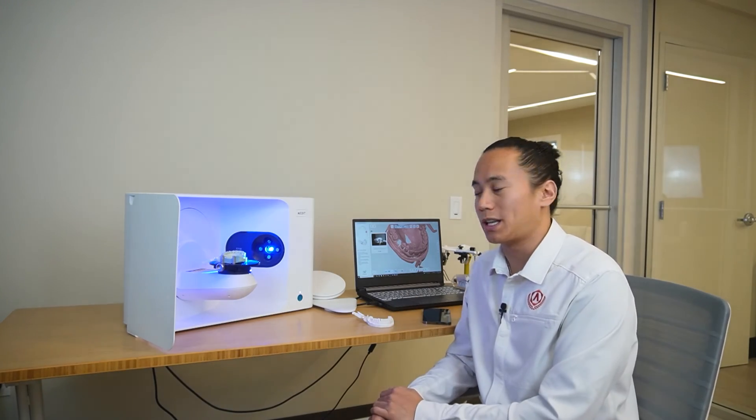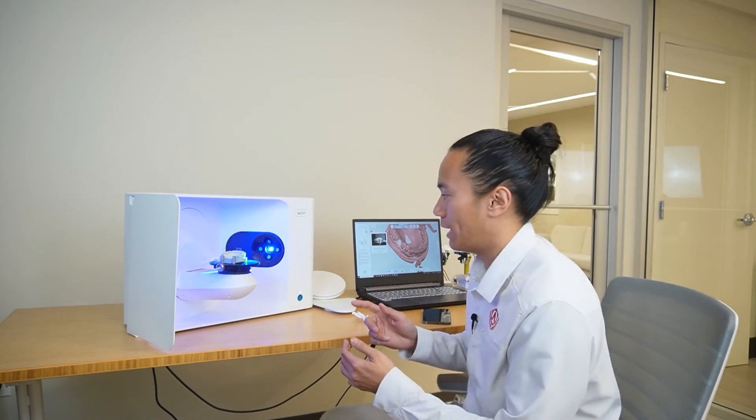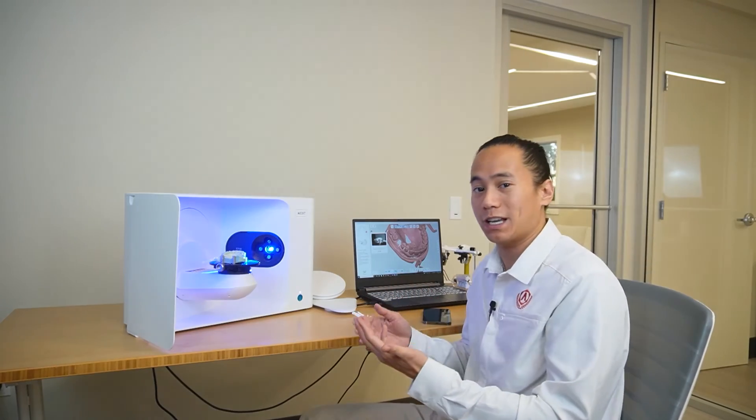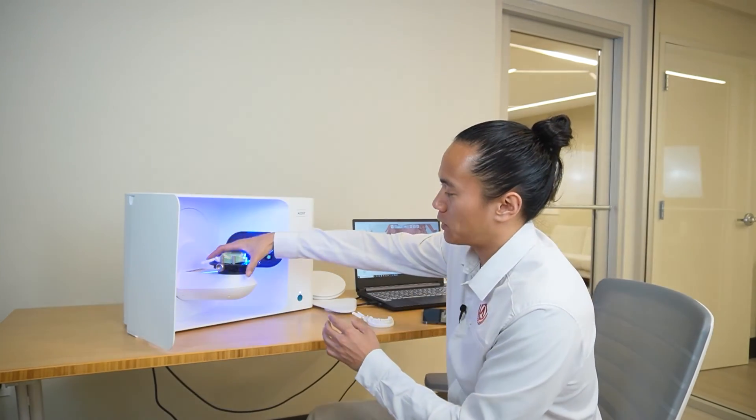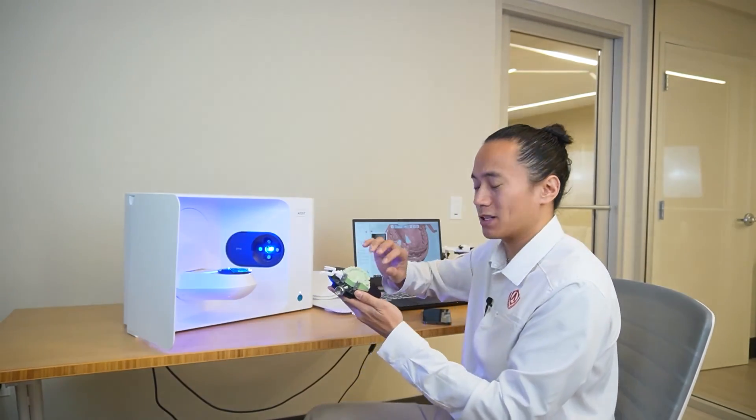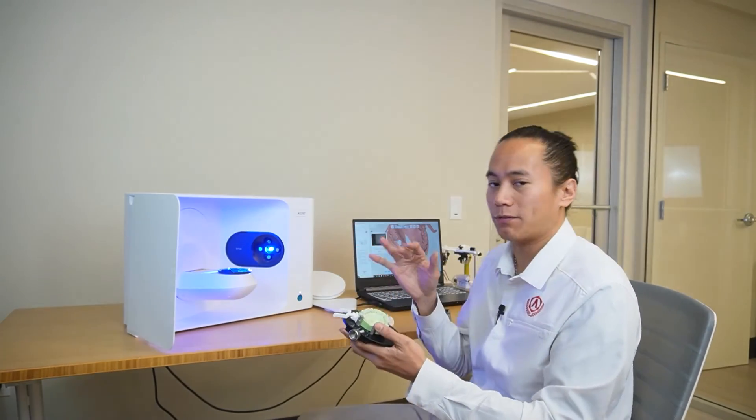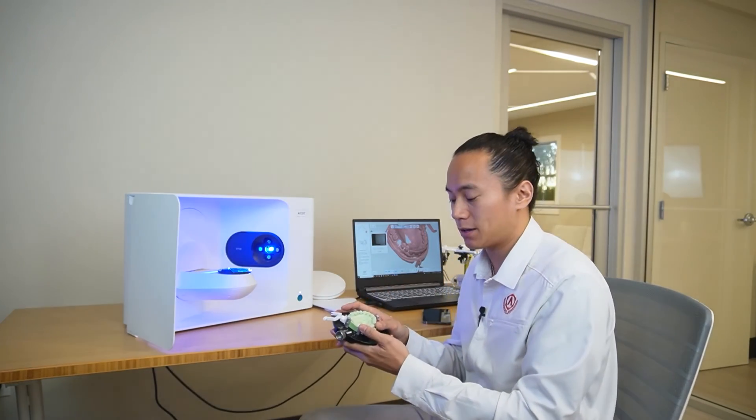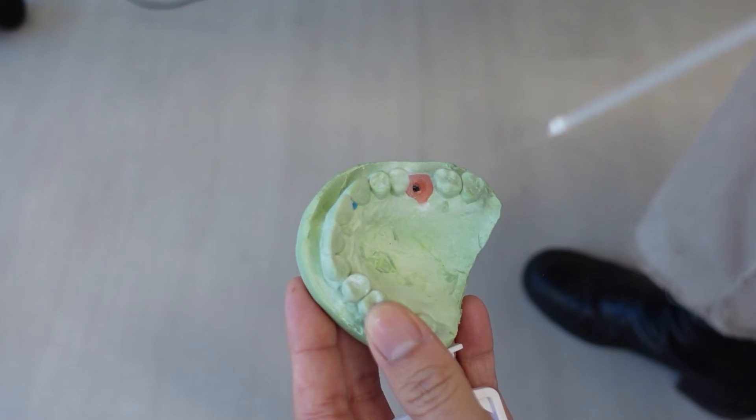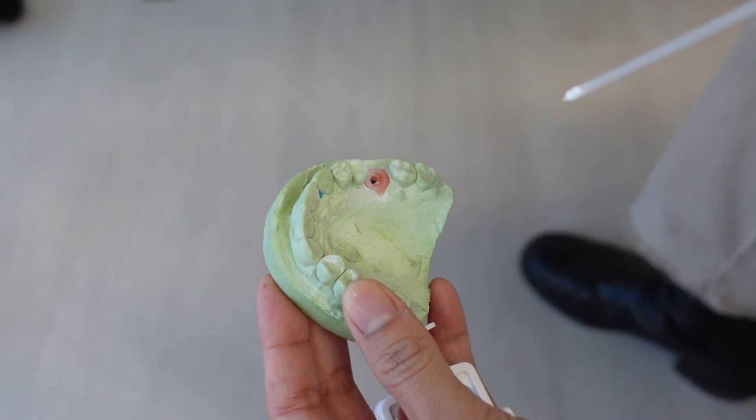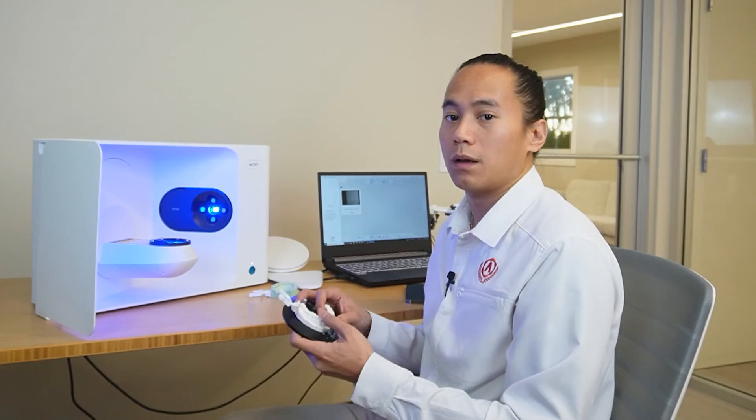Once your gingiva has finished scanning, go ahead and double check that you've been able to pick up all the data that you needed to. Sometimes when your gingiva mask is a little bit translucent or reflective, the scanner will have a hard time picking up all the fine details. So, you'll want to just add a little bit of CAD-CAN spray to your gingival mask and re-scan it from there.